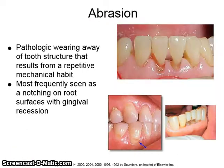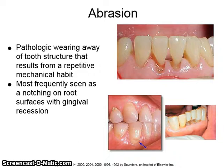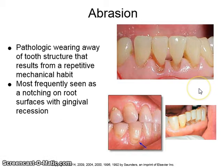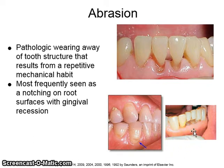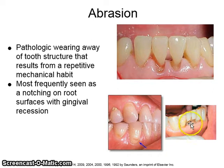Abrasion is the pathologic wearing away of tooth structure that results from a repetitive mechanical habit. It is most frequently seen on root surfaces with gingival recession. The top right image shows the mechanical repetitive damage done to the interproximal surfaces of teeth by aggressive hygiene scaling. This picture shows the typical abrasion near the cervical area, which is a dished-out area. This image shows abfraction lesions, which are more wedge-shaped and look like somebody took an axe and tried to cut off a piece of the tooth.